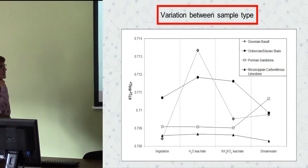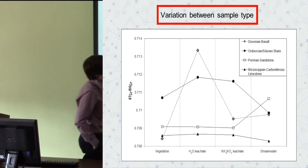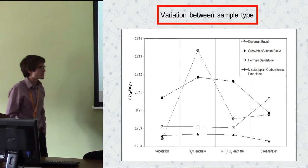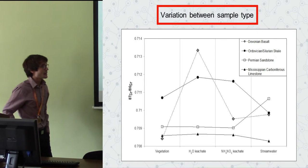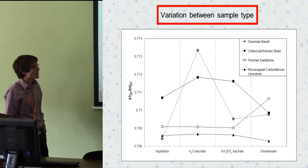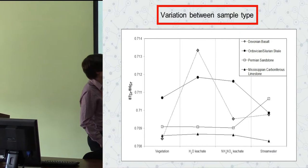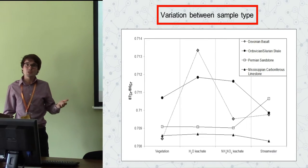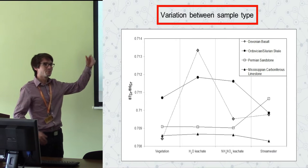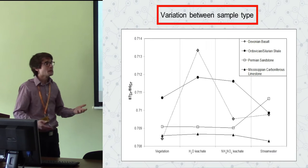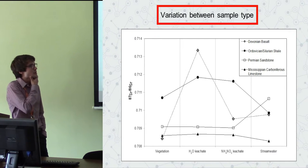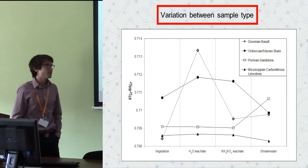Looking at the variation between sample media — vegetation, two soil leachates (one with water and one with nitrate), and streamwater — for the limestone it's quite nice: more or less the same results across different sample media. But for example on the basalt, the two different leaching methods give completely different results, and the streamwater is not in agreement with the vegetation. Sometimes the leachates are in phase with the plants but the streamwater is not. The water can come from much further up, picking up strontium from other formations before reaching the point where we're sampling it. So from this, we think that streamwater is not a suitable medium for biologically available strontium.